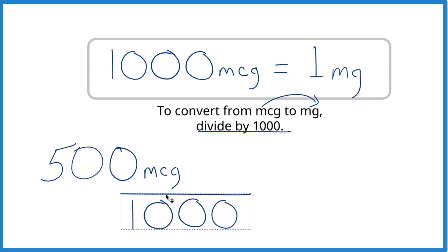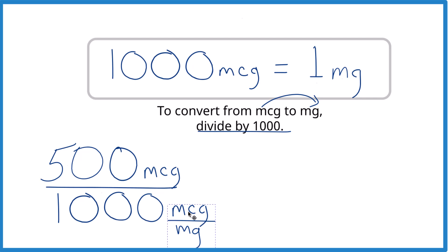So 500 micrograms divided by 1,000, and remember, it's 1,000 micrograms per milligram. So we can put micrograms per milligram down here.